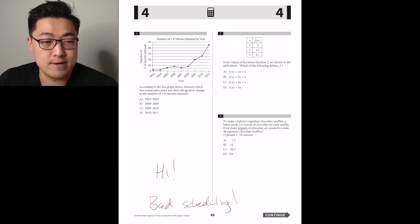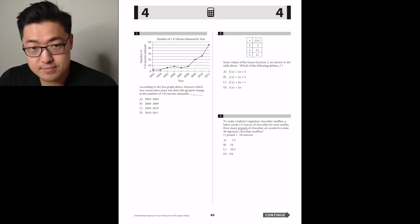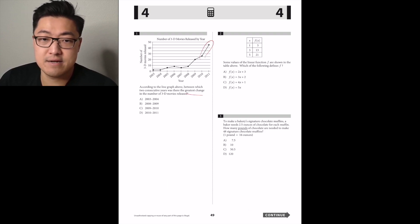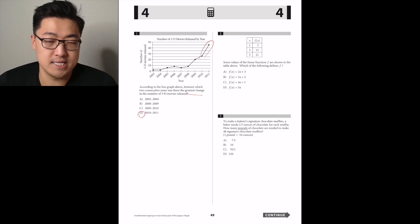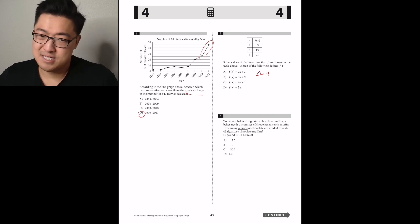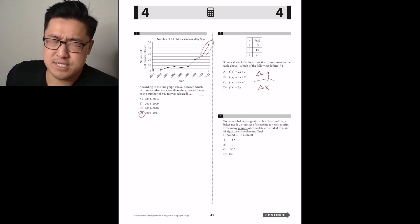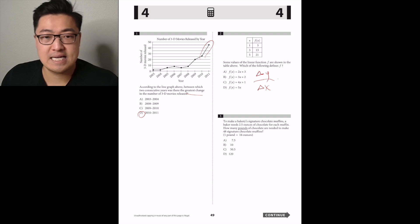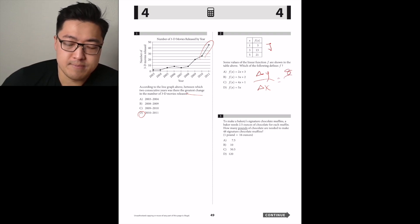The answer is D — some values of a linear function F are shown in the table above. Which of the following defines it? Just look for change of X over change of Y — or rather change of Y over change of X. So it's 8 over 2, which is 4. Answer choice C. It's going to be slow.